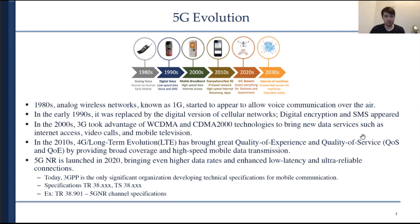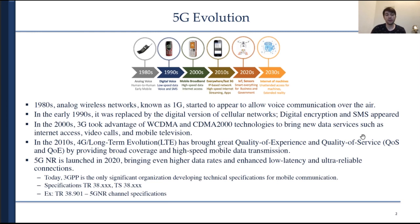Today the main organization developing technical specifications for mobile communication is called 3GPP — the Third Generation Partnership Project. They produce documents placed in open access, usually called TR or TS, and they start with the number 38. TS stands for Technical Specification and TR stands for Technical Report.